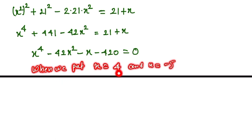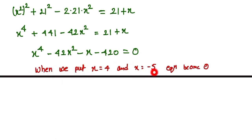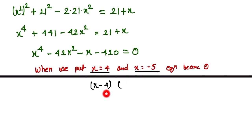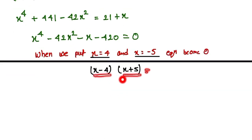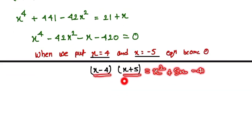We test the values x equals 4 and x equals minus 5. When we substitute x equals 4 and x equals minus 5, the expression becomes 0. So the factors are (x minus 4) and (x plus 5), and multiplying these gives x squared plus 5x minus 4x minus 20, which is x squared plus x minus 20.